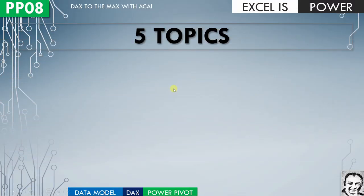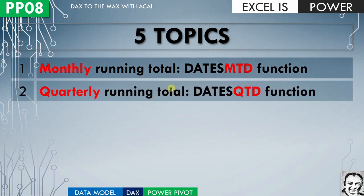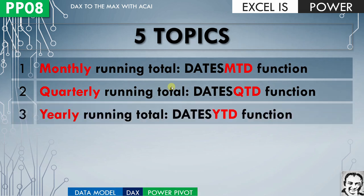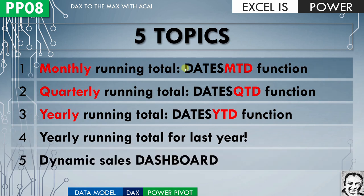In this video, PP08, we are going to look at five topics: how to calculate monthly running total using DatesMTD, quarterly running total using DatesQTD, yearly running total using DatesYTD, the yearly running total for last year in order to calculate the year-over-year change, and finally how to create a simple and dynamic sales dashboard to look at our data from different angles.